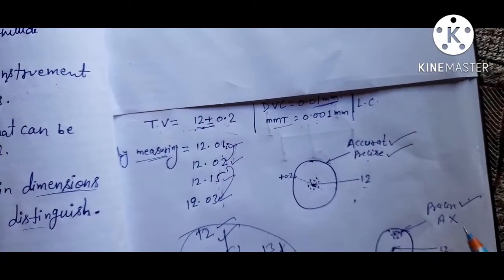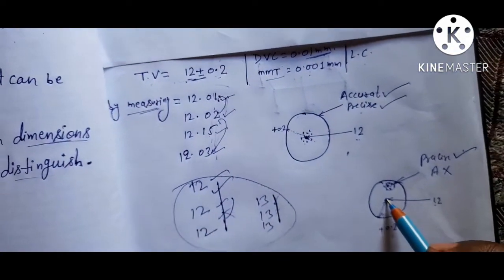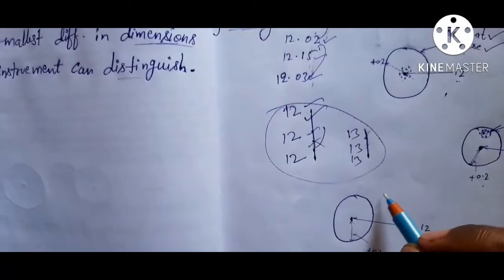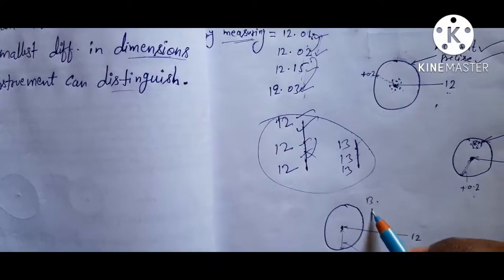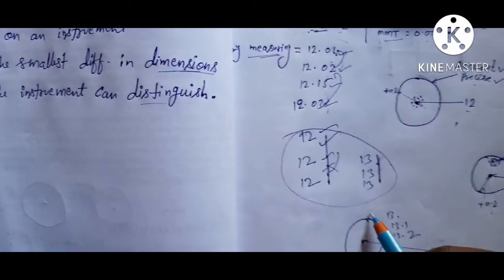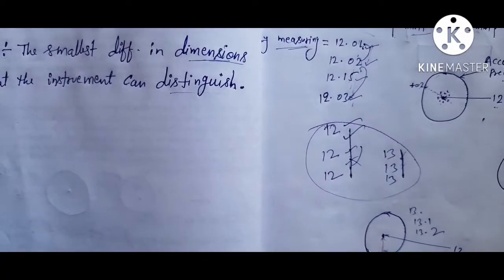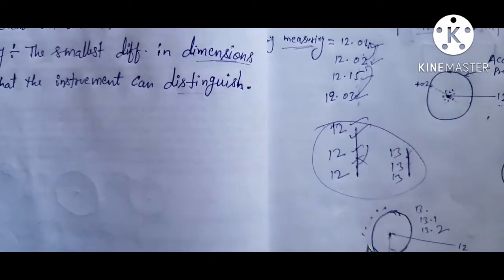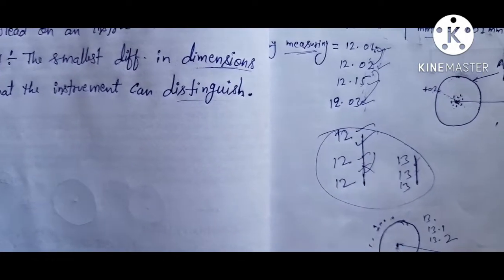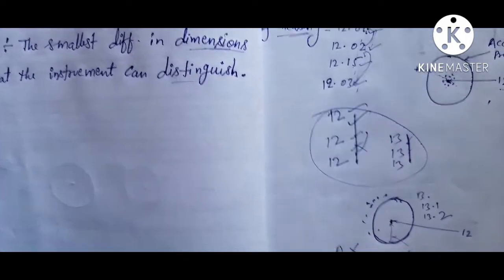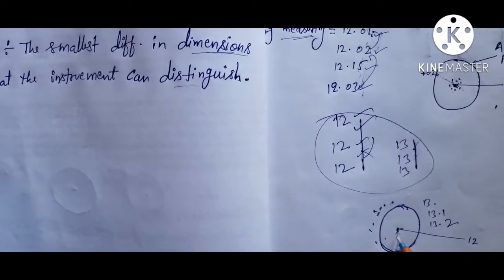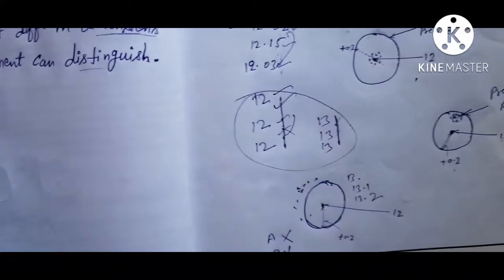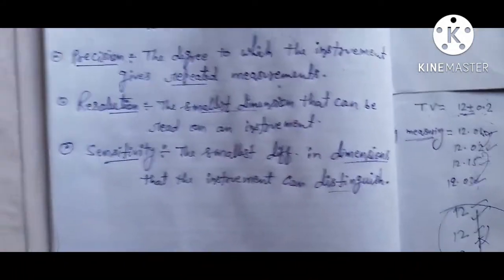If measurements are 12, 13, 13.1, 13.2 — these readings fall outside the circle, outside the limits. In this case the readings are not accurate and not precise, because all dimensions fall outside their allowable circle.